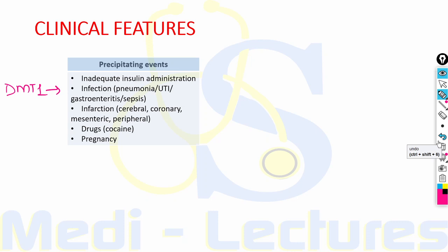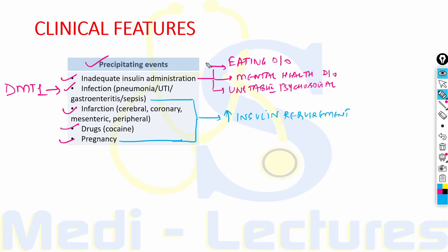The clinical features of DKA develop over 24 hours. Factors that precipitate DKA include inadequate insulin administration, concurrent infection like pneumonia, UTI, gastroenteritis or sepsis, infarction like cerebral, coronary, mesenteric or peripheral, drugs like cocaine, and pregnancy. Inadequate insulin administration can occur in patients with eating disorders, mental health disorders or unstable psychosocial environment. Infections and pregnancy lead to increased insulin requirement.